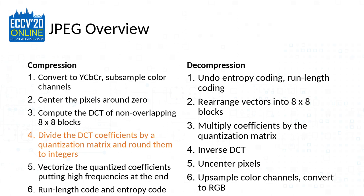On the compression side, the image is usually given in RGB color space, and that's converted to YCbCr color space, and usually the color channels are subsampled. The pixels are then centered around 0, and the discrete cosine transform of non-overlapping 8x8 blocks is taken. Then the DCT coefficients are divided by a quantization matrix.